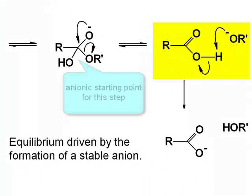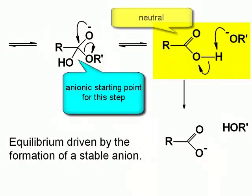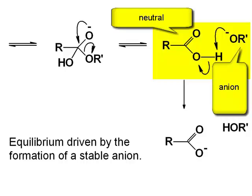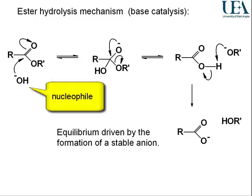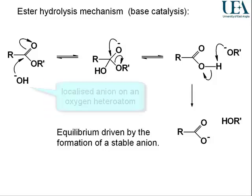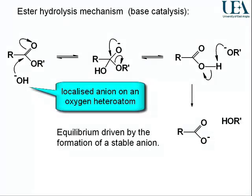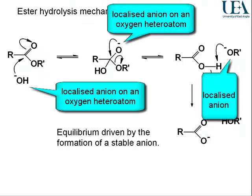Glance at that result and check the charges. We have an anionic intermediate in the center of the slide, and now we have a neutral structure — the associated form of the carboxylic acid, which won't last long in base — and we have an anion. Let's check the energetics. We have a relatively reactive nucleophile whose power comes from being an oxygen-centered anion. After the carbon bond to the OR-prime group has broken, we have a localized anion on an oxygen heteroatom. They're all pretty much similar in energy. There is no great mountain to climb in terms of energy in this mechanism.